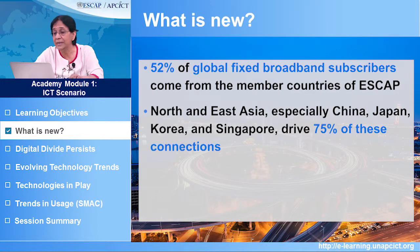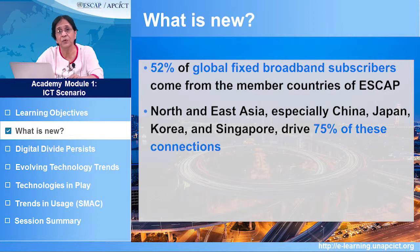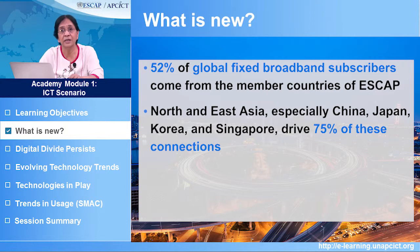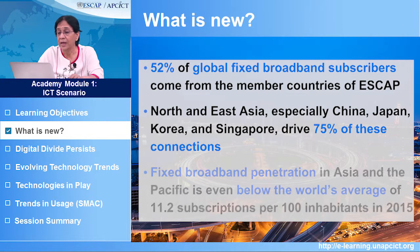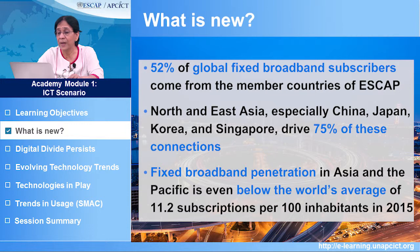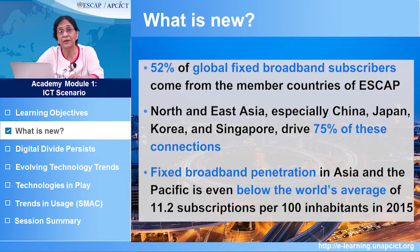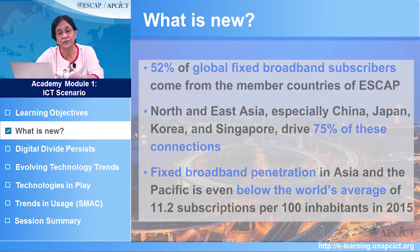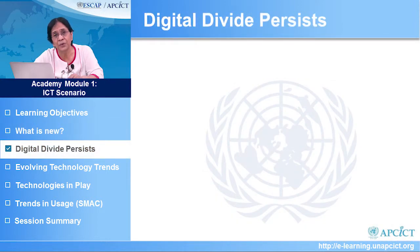However, North and East Asia — especially China, Japan and Korea, and we include Singapore as a developed country in Asia-Pacific — drive 75% of the connections currently in Asia-Pacific. Despite this, fixed broadband penetration in Asia and the Pacific is even below the world average of 11.2 per 100 inhabitants in 2015.